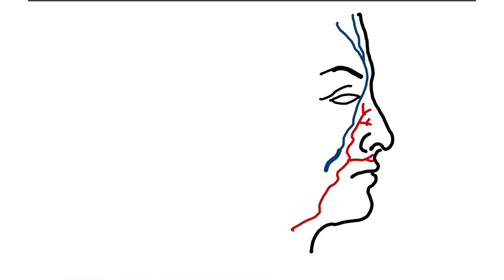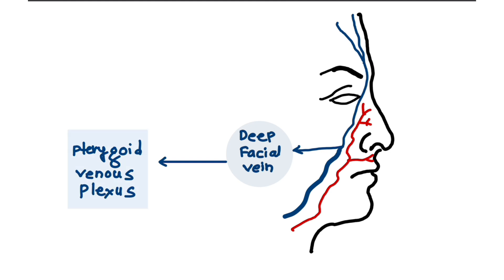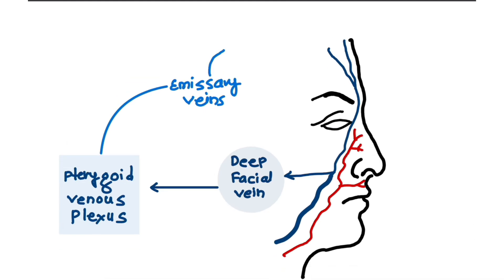The venous communication follows the following course: facial vein joins to the deep facial vein, then to the pterygoid venous plexus. It then gets connected to emissary veins which finally enter into the cavernous sinus.